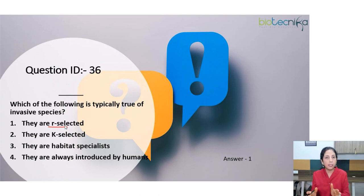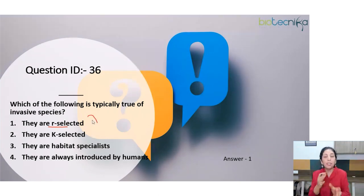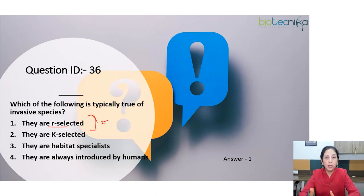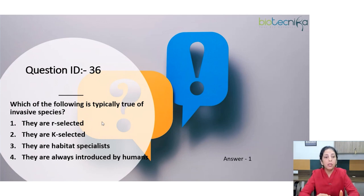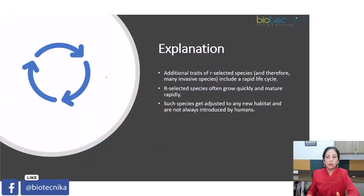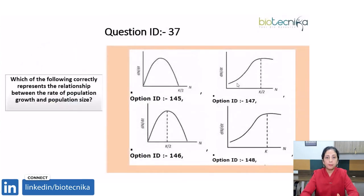Whenever I teach this concept I always tell my students that it is very important to understand that we can keep living species into two categories based on how natural selection has worked: r-selected and k-selected. R-selected is the name given to those species which reproduce very quickly because they have tremendous reproductive potential — they invest only in reproduction. Although most of the offspring may not be able to survive, they will show rapid growth and early maturation. Because of that reason, we can definitely expect invasive species to be r-selected, as they must show a rapid life cycle.